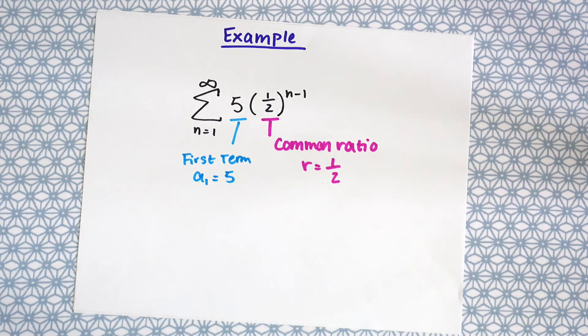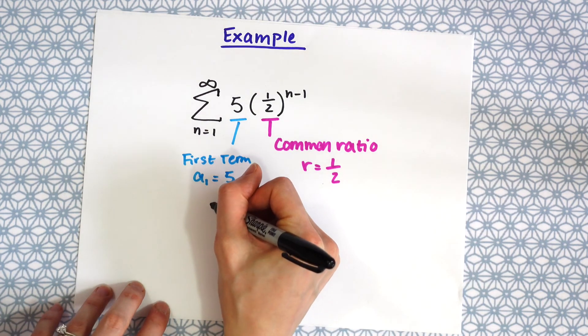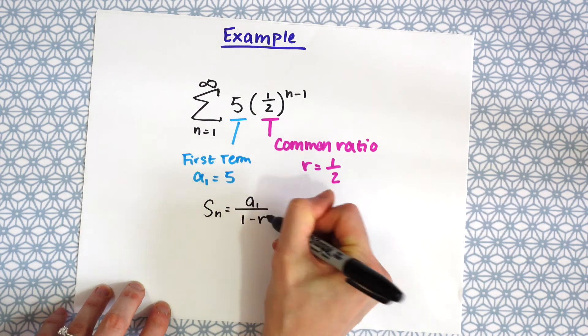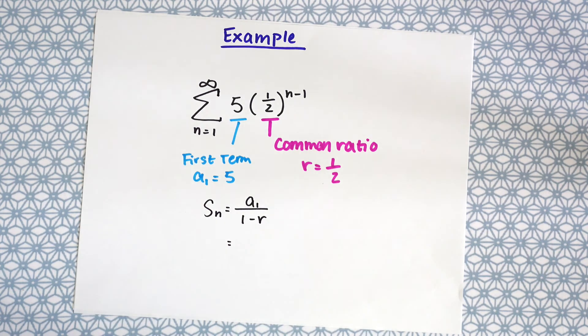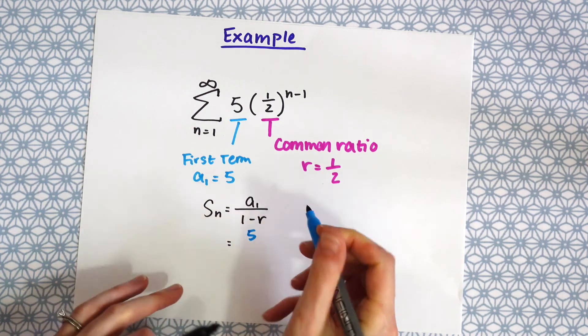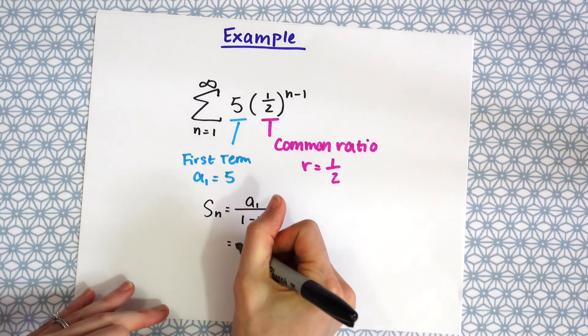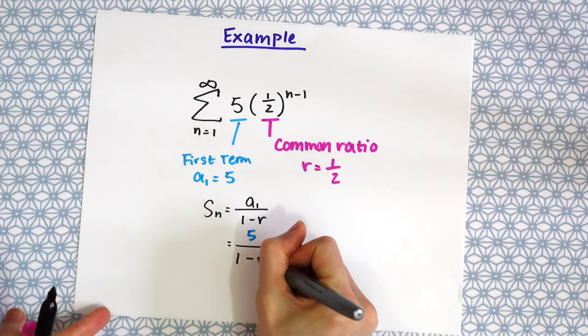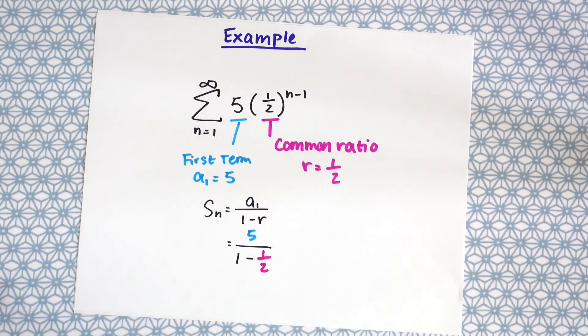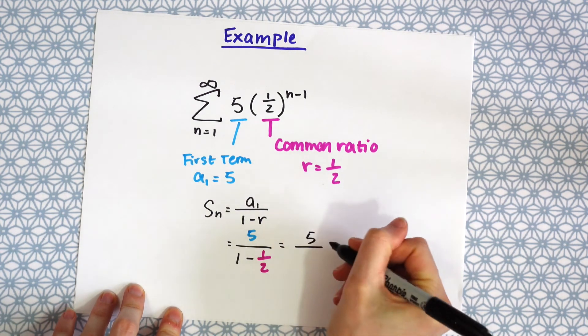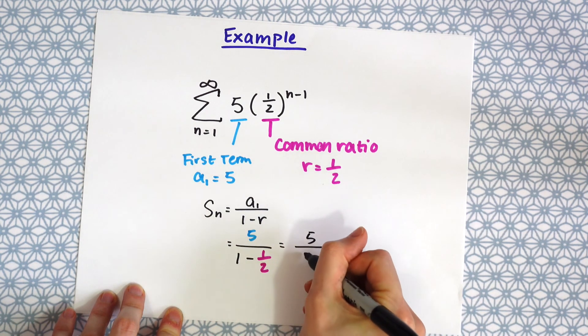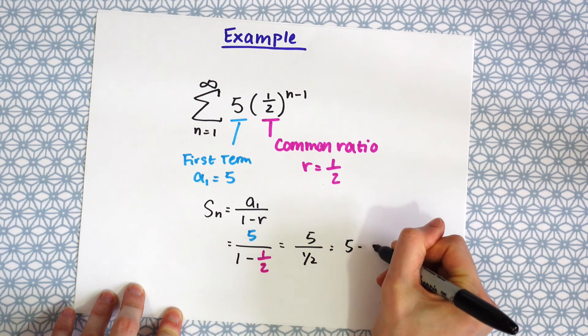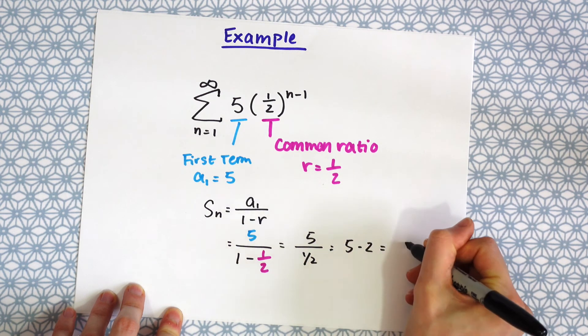Now let's write out that formula for finding the geometric infinite sum. So now we just need to fill in our formula here. So we see a sub 1 is 5, all over 1 minus r, which is 1 half. So this becomes 5 over 1 minus 1 half, which just becomes 5 times 2, which is 10.